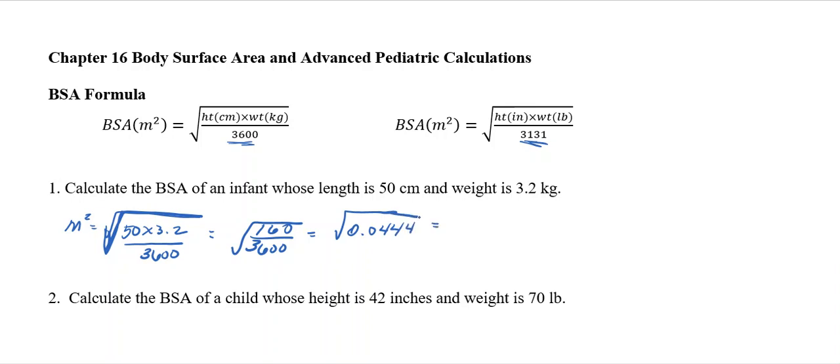And I'm going to round it to four decimal places. Then I'm going to take the square root of it. And then I get my BSA is 0.2107. And we're going to round the BSA to two decimal places, so it's 0.21 meters squared. So most of this you can do in your calculator.